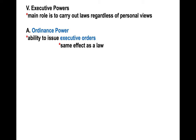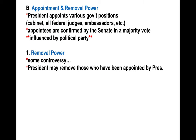Another example was President Trump's so-called travel ban, where the United States said people from certain countries aren't welcome to travel into the United States. That was an executive order, not a law, but it had a similar effect as a law. So ordinance power simply refers to the president's ability to issue these executive orders.